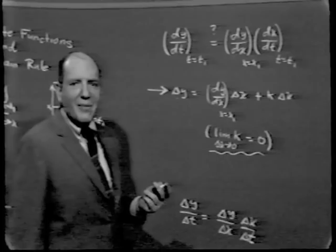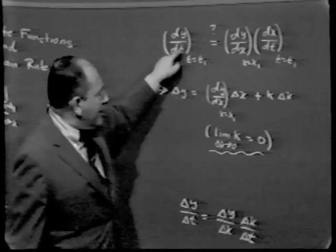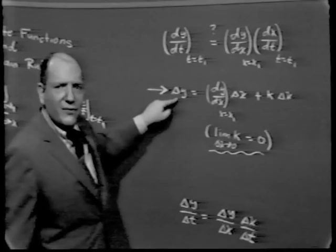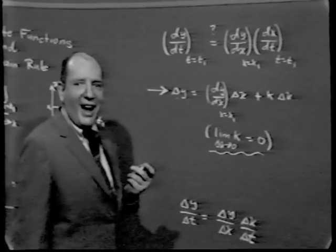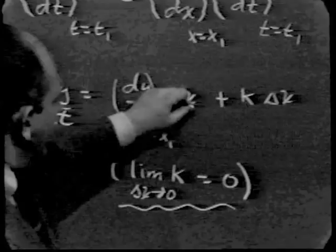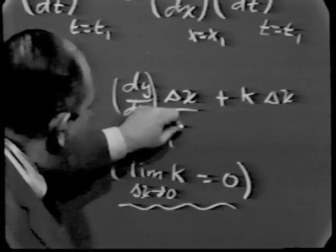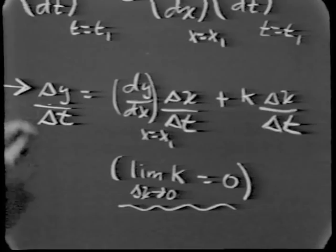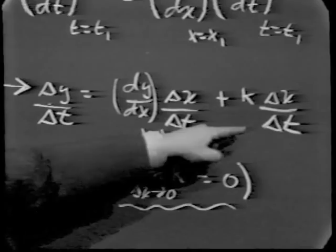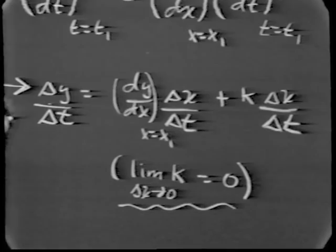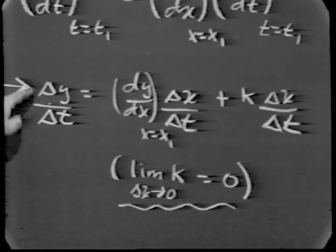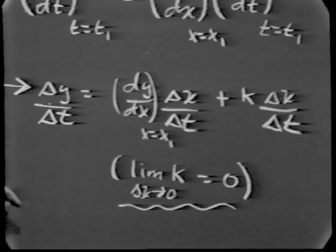How do we use this to check our conjectured result? Calculus is a one-step-at-a-time procedure. We want dy/dt, which means we first want delta y divided by delta t, then take the limit as delta t approaches 0. Starting with our known recipe, we divide through by delta t — we can do this because delta t is not 0. Then we take the limit of both sides as delta t approaches 0. On the left-hand side, the limit of delta y divided by delta t as delta t approaches 0 is precisely dy/dt evaluated at t equals t1.